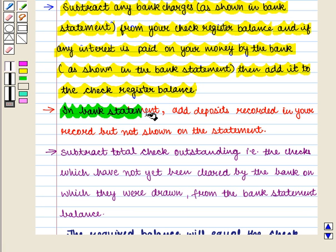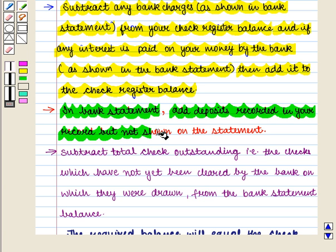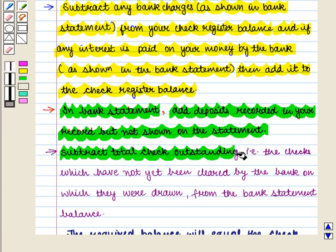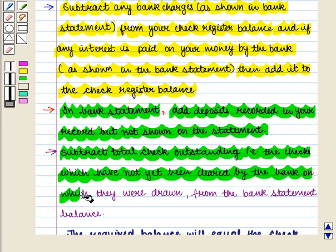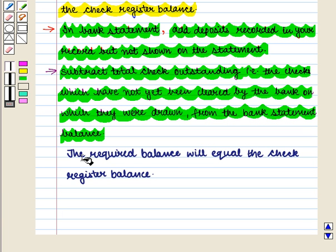Then in the bank statement, add deposits recorded in your records but not shown on the statement. After this, subtract total outstanding checks — that is, checks which have not yet been cleared by the bank — from the bank statement balance. The resulting balance will equal the check register balance.